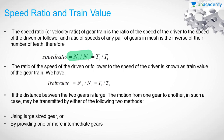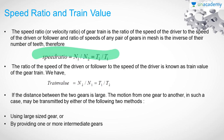The ratio of the speed of the driven or follower to the speed of the driver is known as the train value, which is the inverse of the speed ratio. It can be written as: train value = N2/N1 = T1/T2. So, speed ratio is the inverse of train value.